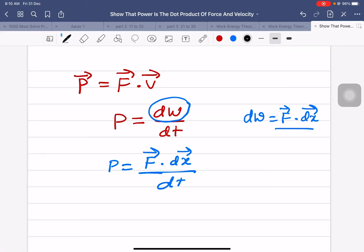But we know that dx by dt, the rate of change of displacement, is equal to velocity.